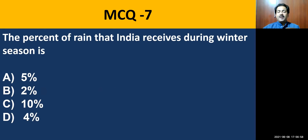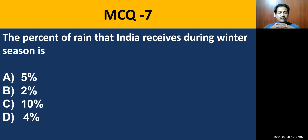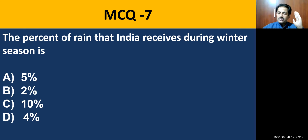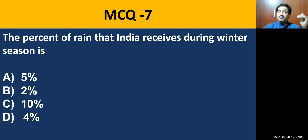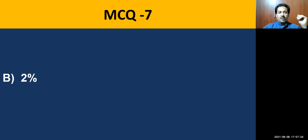MCQ question number seven: the percent of rain that India receives during winter season is just 2%. In winter we receive almost 2%; in rainy season 75%; in summer it is 10% of rainfall; and in retreating monsoon almost 13% of rain. The answer is 2% of rain in winter.